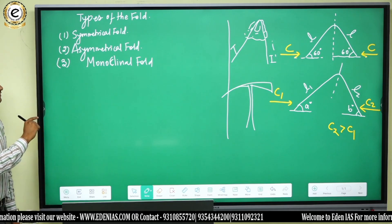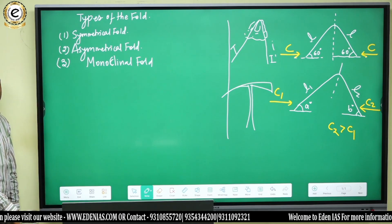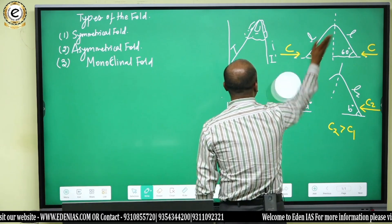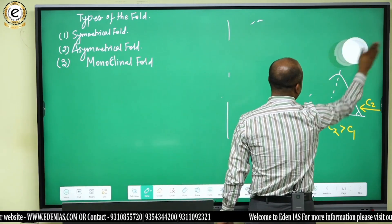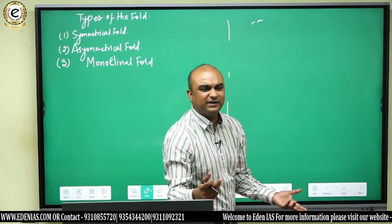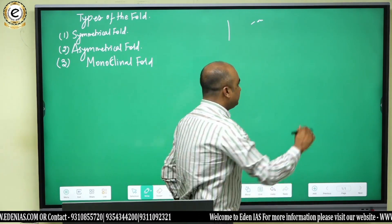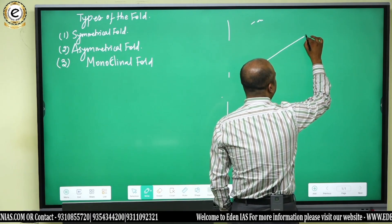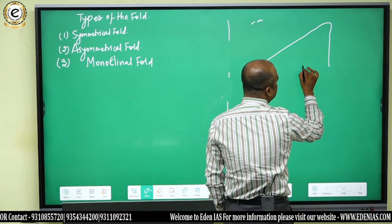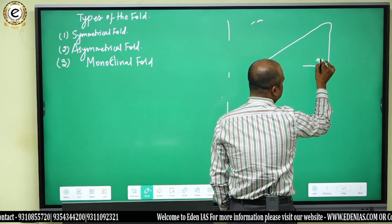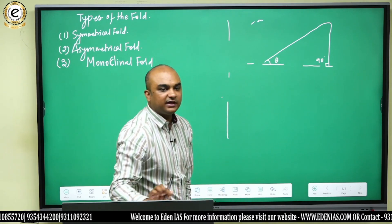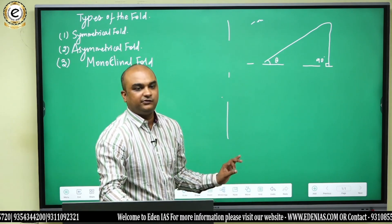The next type of fold is the monoclinal fold. A monoclinal fold is a special type of asymmetrical fold in which one limb is very gentle, whereas the other limb is very steep, almost making a 90-degree angle. That type of fold is known as a monoclinal fold.